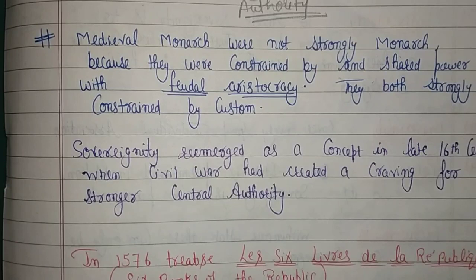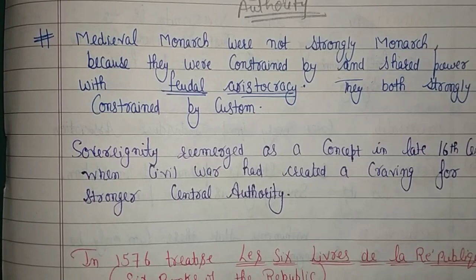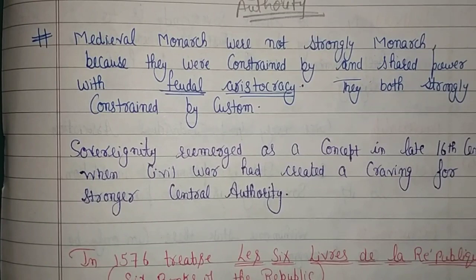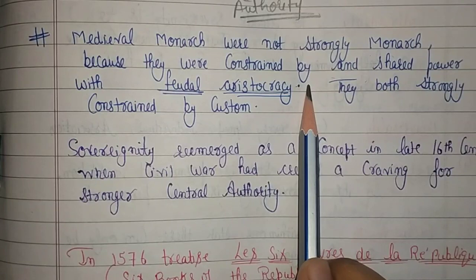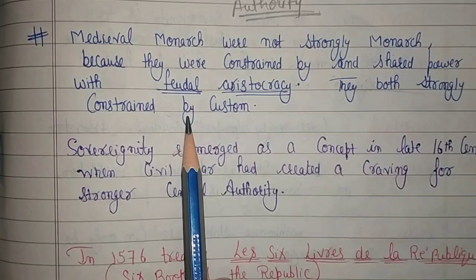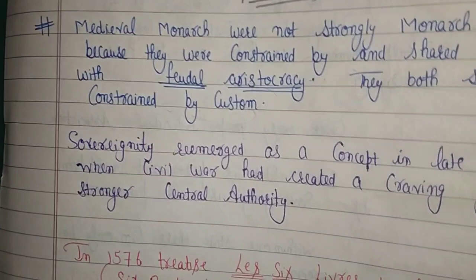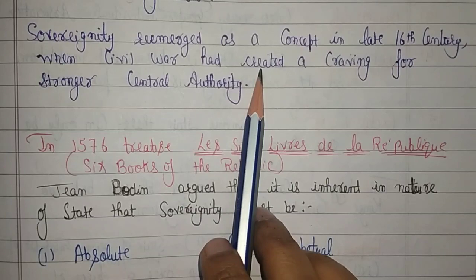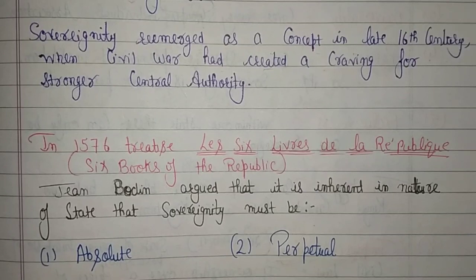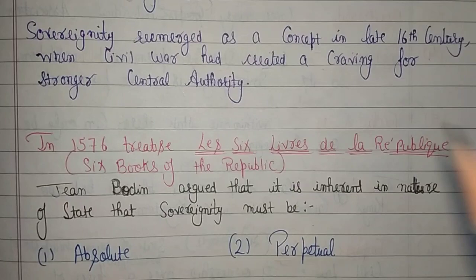जब आप किसी partnership पे business start कर रहे हो तो सारे decisions आपके नहीं होंगे — you have to discuss with your partner also। तो decision और authority divide हो जाएगी, absolute power आपके हाथ में नहीं रहेगी। अगर आप solely business start करो तो complete power is in your hand। यही चीज थी — थोड़े constraints थे, custom और रीती-रिवाजों के भी। बाद में civil war से लोगों में proper authority की इच्छा जाग गई, तब sovereignty का concept दुबारा देखने को मिला।